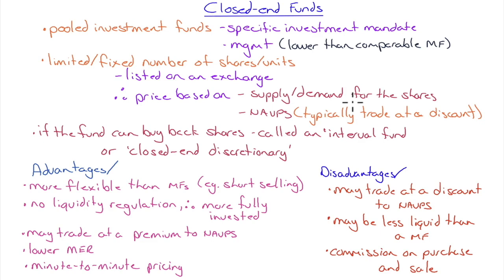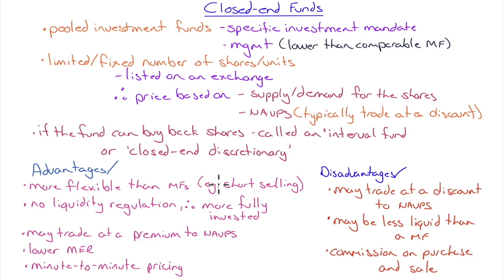With closed-end funds, supply and demand for the shares introduces a new pricing element — unlike mutual funds where supply and demand has no effect on the net asset value per share. A closed-end fund may trade below, at par with, or even at a premium to its net asset value. If the fund can buy back its own shares on the open market, it's referred to as an interval fund or closed-end discretionary fund. An advantage is that you can short sell a closed-end fund listed on an exchange — you can't short a mutual fund.